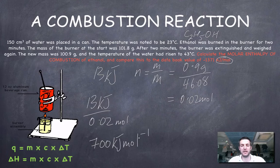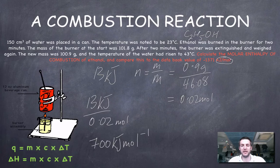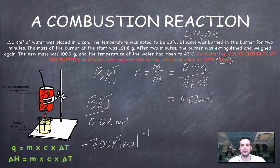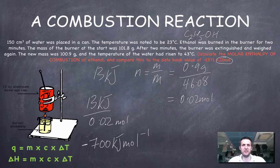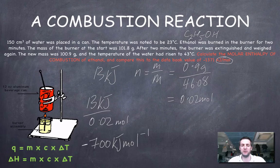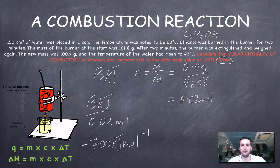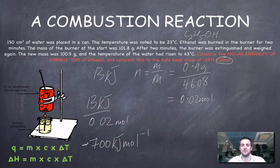Now, does this answer make sense? This is clearly an exothermic reaction, but I've ended up with a positive value for the enthalpy of combustion. So I just put a negative in here, because I know the value has to be negative. If the heat supplied to the water was 700 kilojoules, that means the enthalpy of the ethanol must have fallen by 700 kilojoules, hence the negative sign.